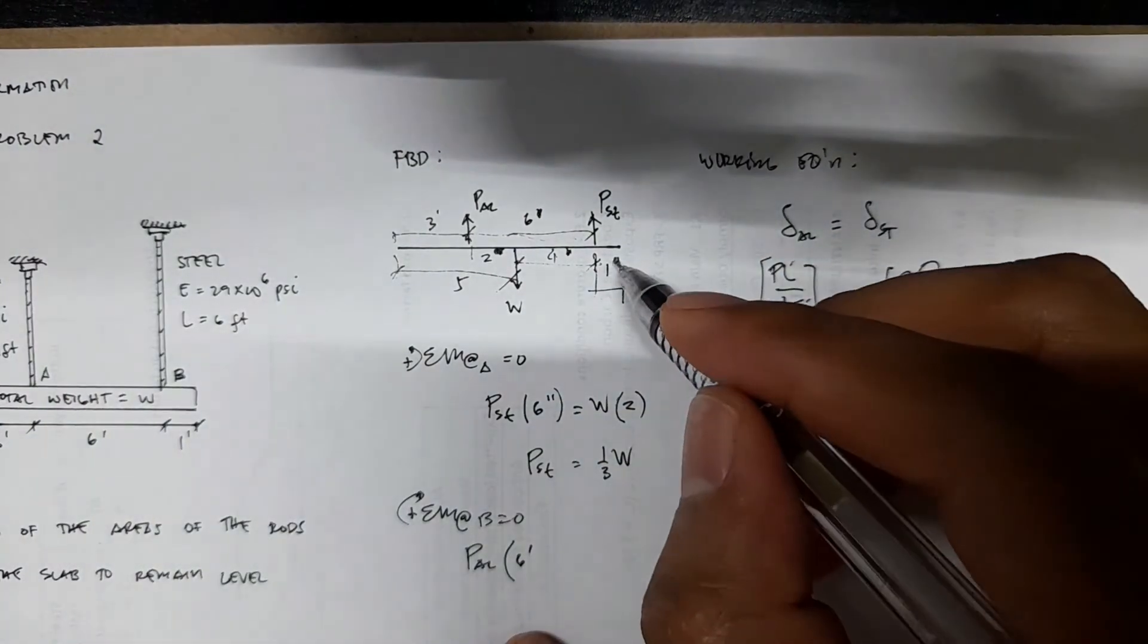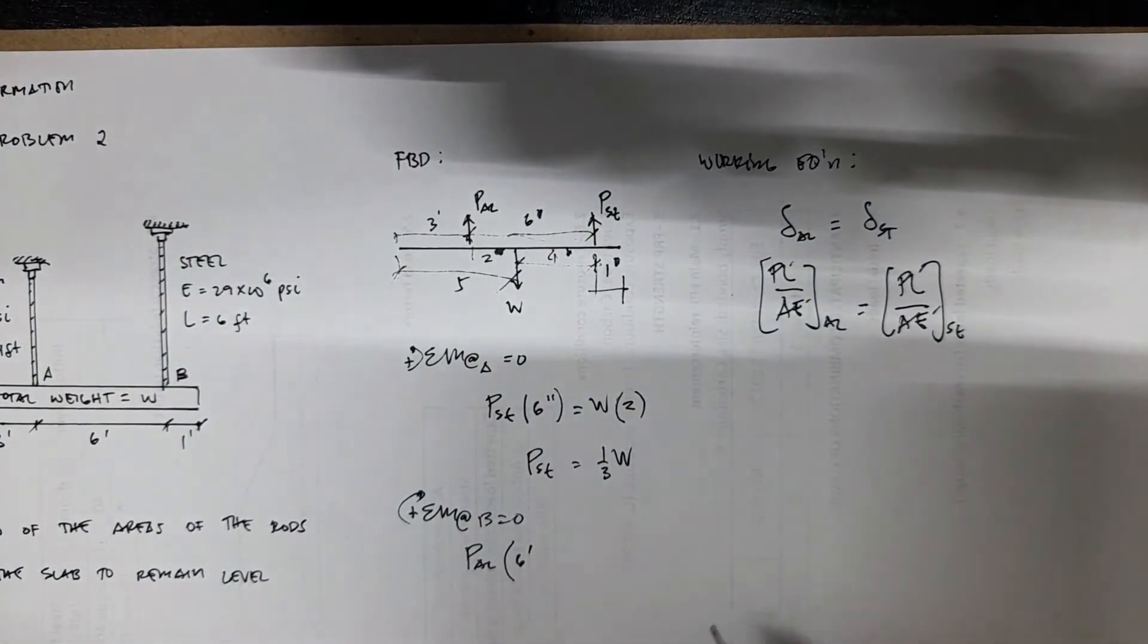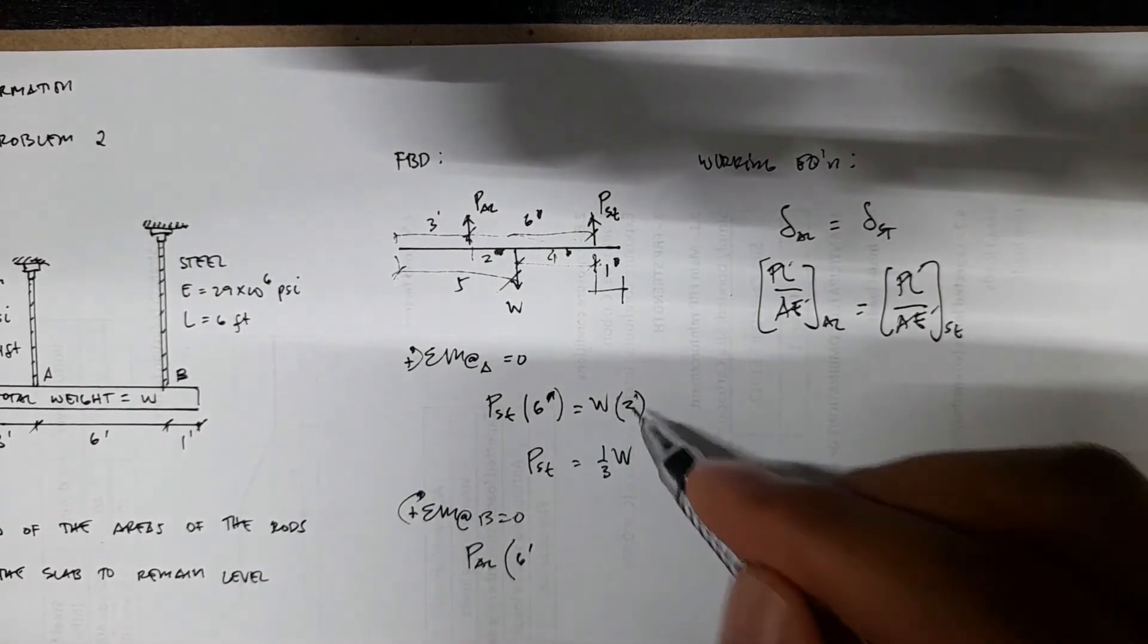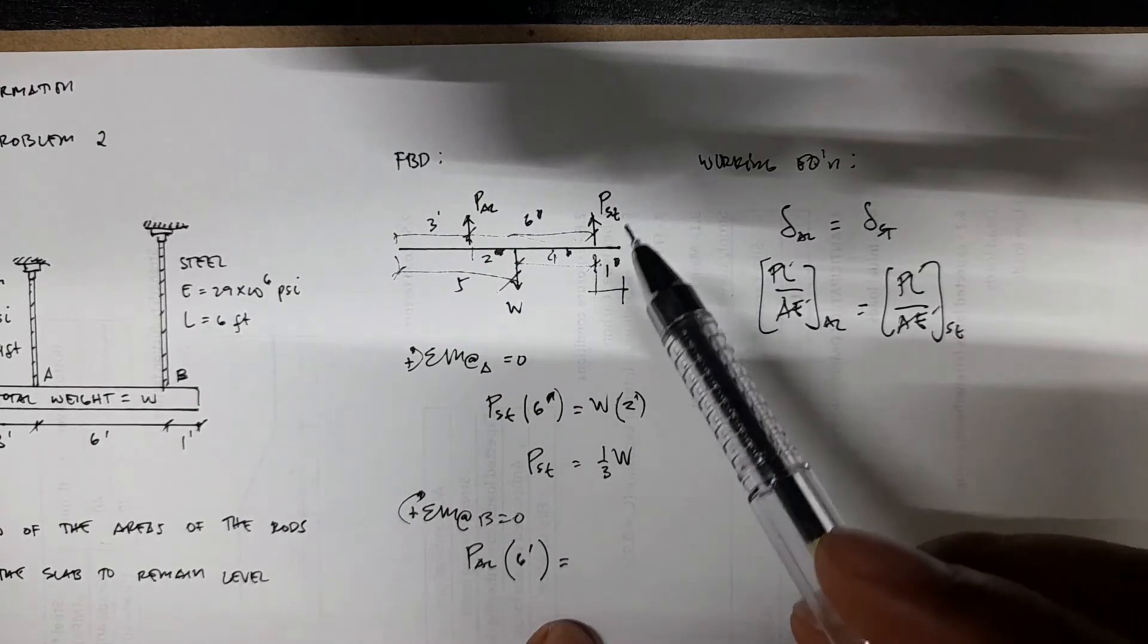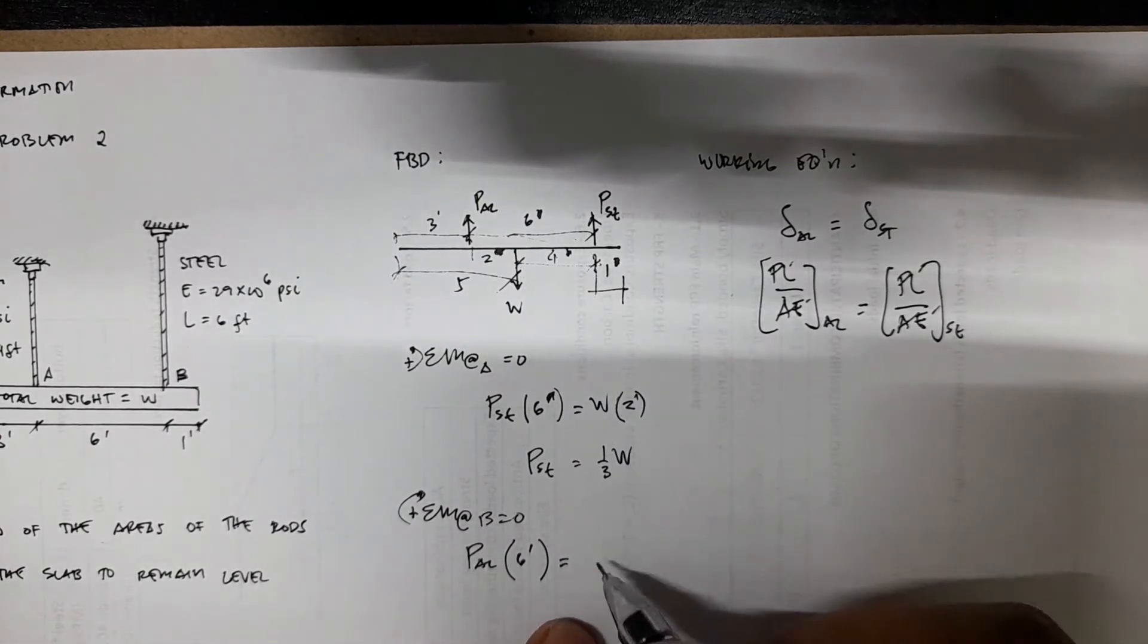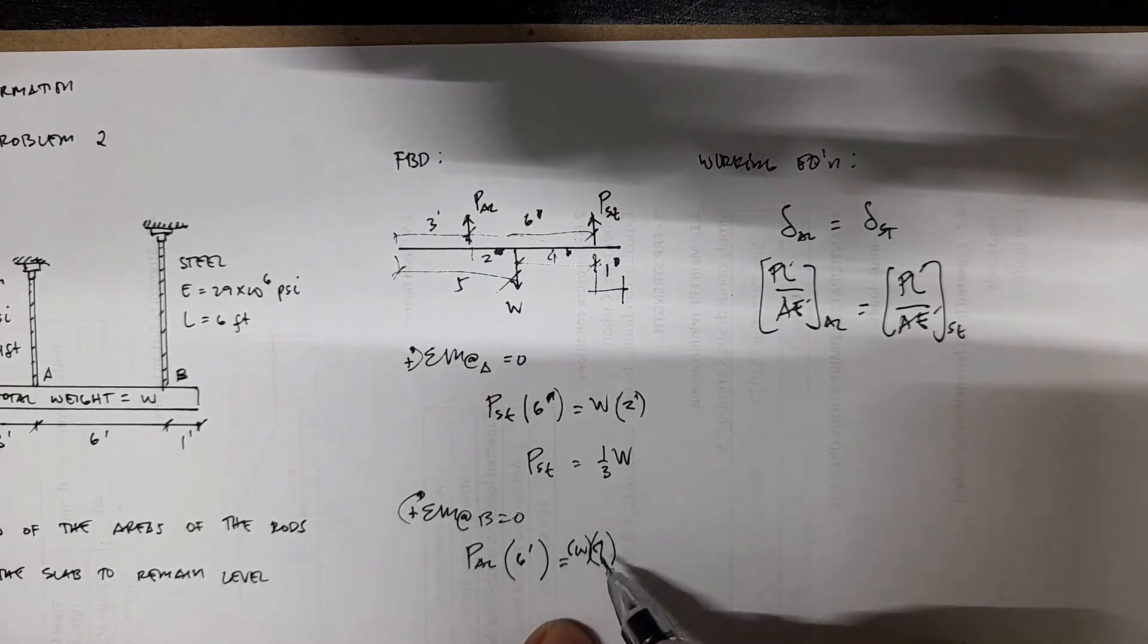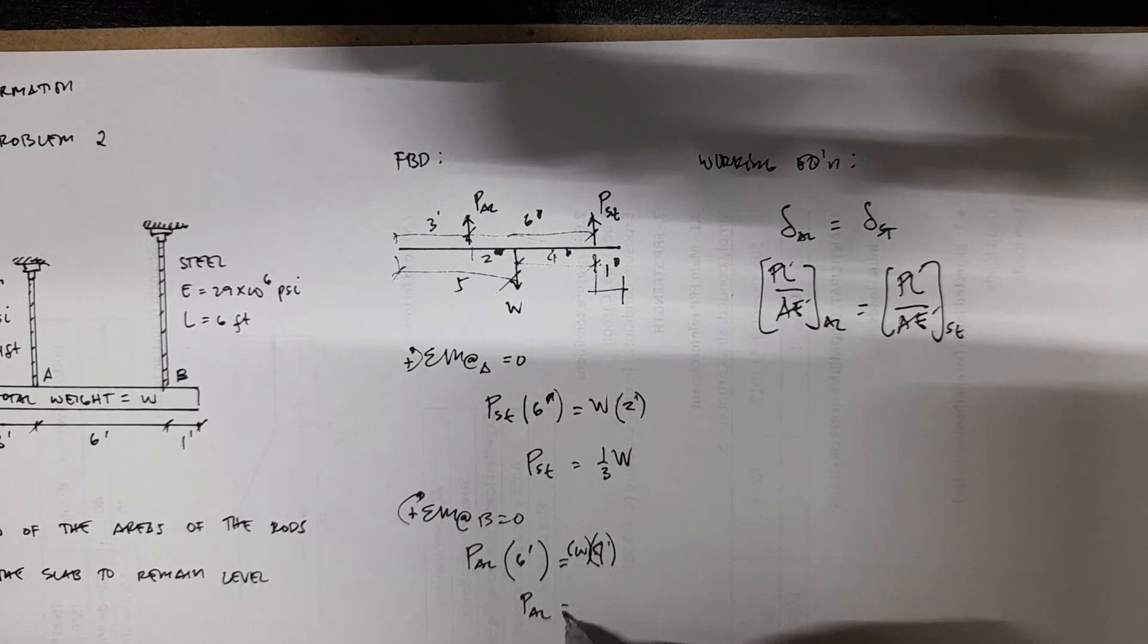Sorry for the confusion, that's supposed to be feet, 6 feet. This equals W times 4, so this is the moment arm. Then we have P_AL equals two-thirds of W. You now have P_ST and P_AL in terms of W.